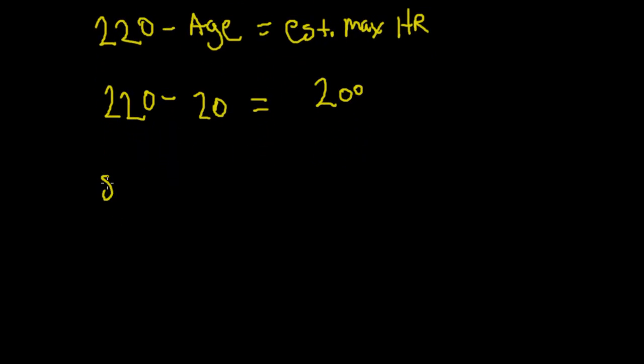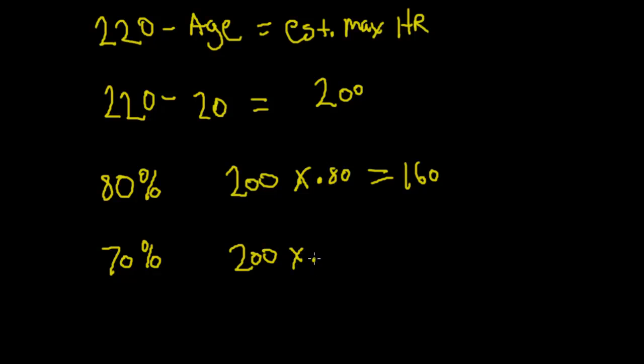So let's take, we want to find our upper limit. So I'm going to set that at 80% and we're going to also want to find our lower limit. So I'm going to set that at 70%. So we're training at 80% of our estimated max. Let's take 200 times 0.80, that's just 80%, that's going to be 160. Down here we'll do the same thing. 200 times 0.70, so that's 70%, equals 140. So now we have our upper and lower limit.